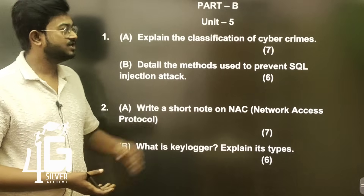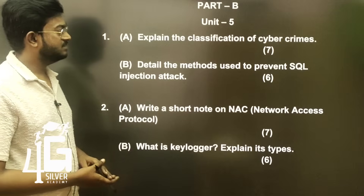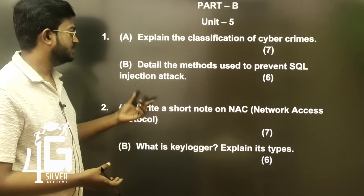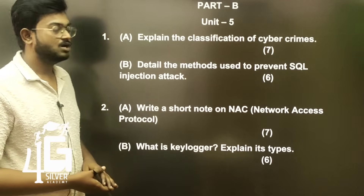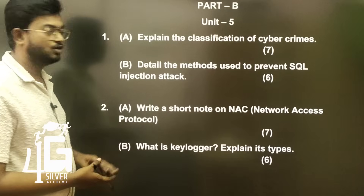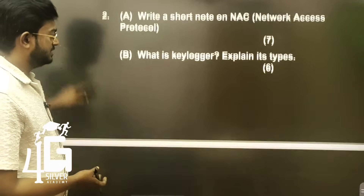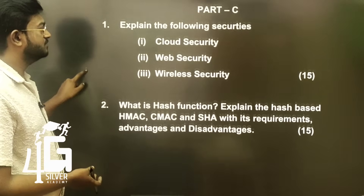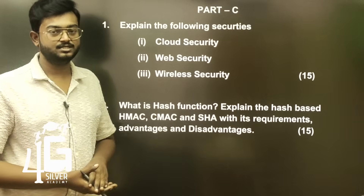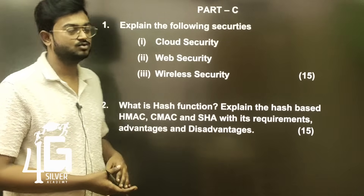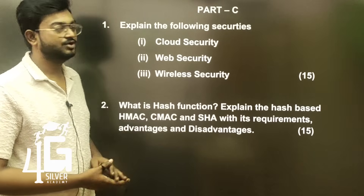Part B, Unit 5 important questions: Explain the classification of cyber crimes. Detail the methods used to prevent SQL injection attacks. Write a short note on NAC (Network Access Control). What is a keylogger — explain its types. Part C, 15-mark question: Explain the security requirements, advantages, and disadvantages of cloud security, web security, and wireless security. Watch other episodes in the appropriate playlist — Fuji Silver Academy, strength, success, charity.